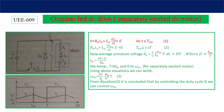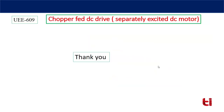Today we discussed chopper-fed DC motor drive, where the speed of the motor is controlled by controlling the duty cycle of the switch, and the average output voltage equals D times the supply voltage. This is a step-down chopper-fed DC drive because the duty cycle can never exceed 1 (100%), so the average output voltage is always less than or equal to the supply voltage. By controlling the duty cycle of the switch we can control the speed of the motor. Thank you.